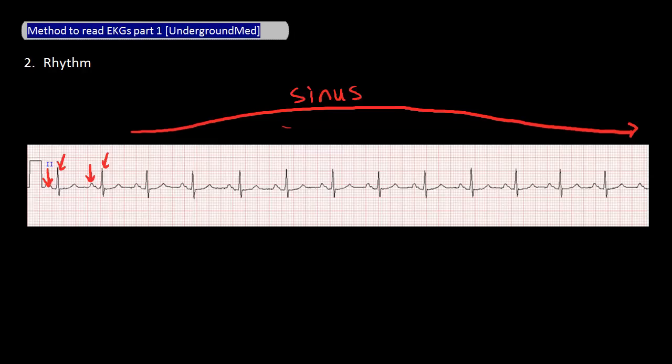If each P wave isn't followed by a single QRS complex, or if there aren't P waves or QRS complexes at all, then you are not in sinus rhythm.